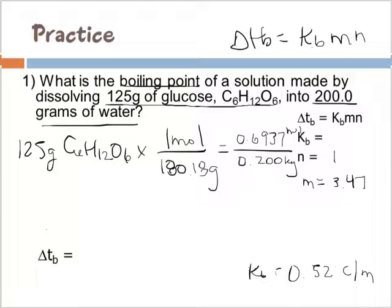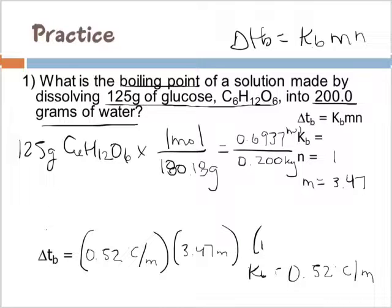All right, we're ready to plug in and solve. Do you all agree? So delta Tb is equal to 0.52 degrees Celsius per m times 3.47m times 1. And we'll cancel out. Okay, so that's going to equal 1.80 degrees Celsius, but we are not done.